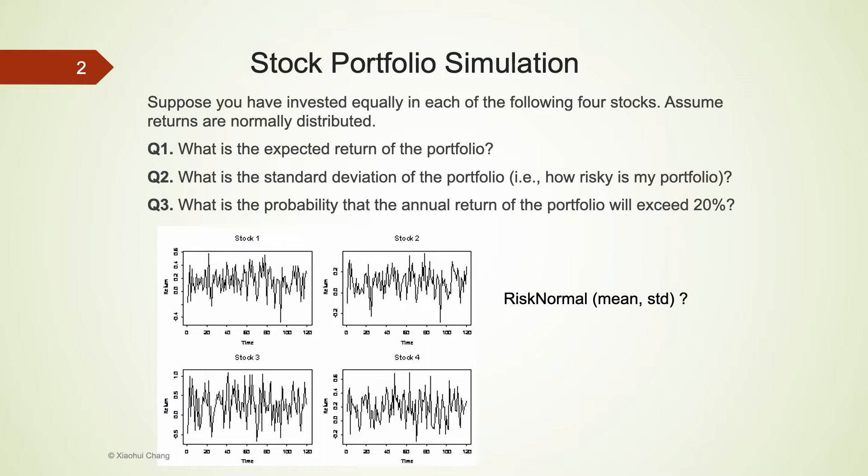This problem appears to be rather straightforward as we learned about risk-normal function to generate values that are normally distributed with some mean and standard deviation. However, in practice, a lot of times stocks, especially those from the same business sector, such as Walmart and Target, tend to move up and down in a similar fashion. Some other stocks may move in the opposite direction.